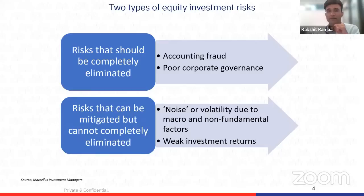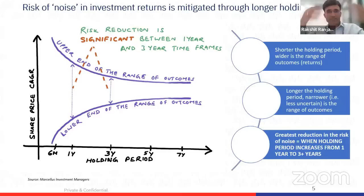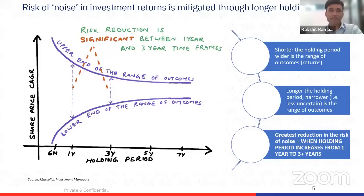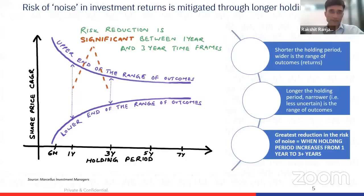Coming to the risk of noise — let me give a few examples of what can cause volatility in returns for an equity investor. Things like FII and DII flows, sector rotations — these are keywords used very often. We get lots of questions from clients around what we see flows doing in stock markets, whether FII outflows or inflows. That's an example of a source of volatility which doesn't affect the fundamentals of pretty much any business, as long as that business isn't dependent on those flows for day-to-day activities.